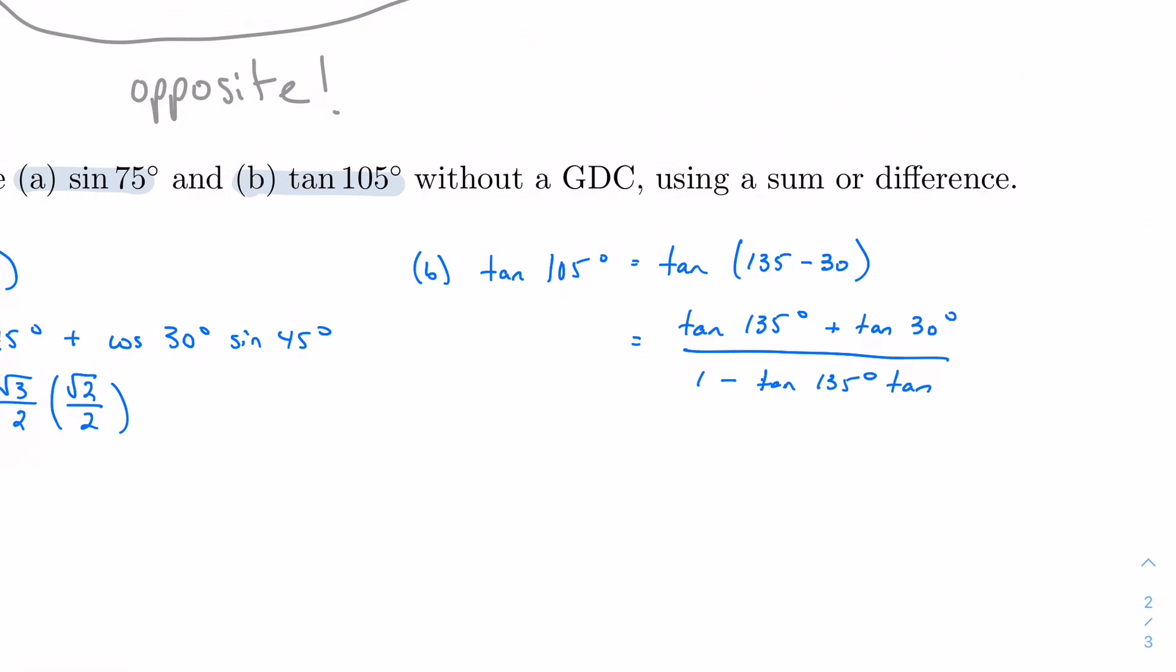Tangent A, tangent B. So tan of 135 puts me in the second quadrant. Tan of 45 is 1. The second quadrant is negative. So this is negative 1. Tangent of 30 is going to give me root 3 over 3. And then 1 minus negative 1 times root 3 over 3. So I get negative 1 plus root 3 over 3, and then I'm going to get 1 plus root 3 over 3. Sorry, 3 plus root 3 over 3 for both of these. So negative root 3, positive root 3. And I'm going to get negative 3 plus root 3 over positive 3 plus root 3. And we could go in and rationalize and simplify that all we want, but I'm just going to leave it as is for the sake of time.